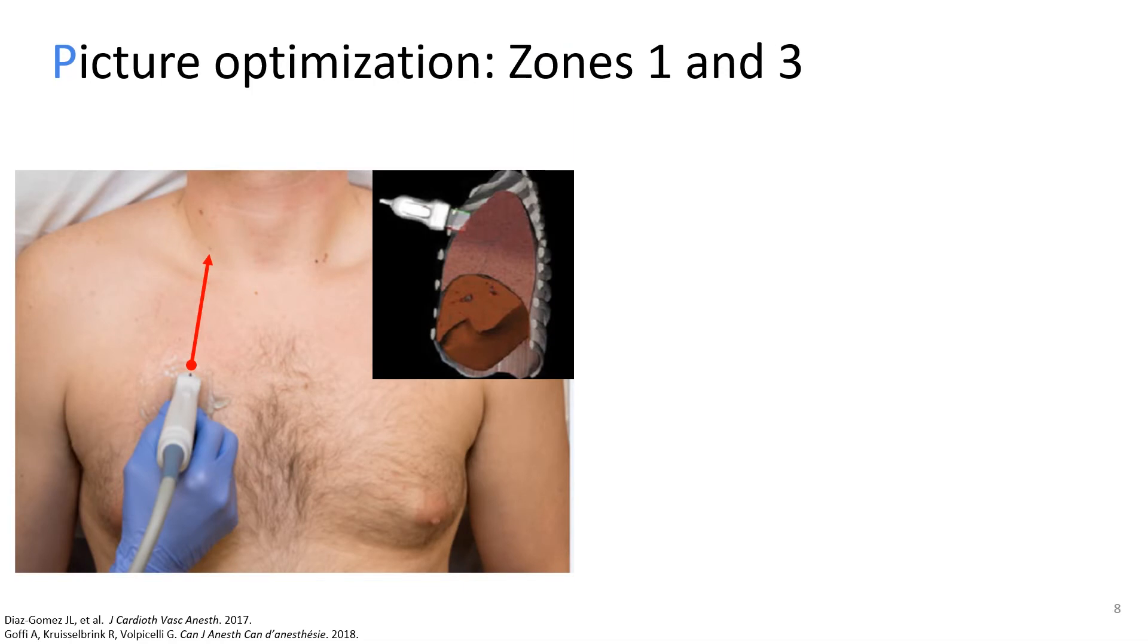Now that you know according to the pulmonary pathologies you want to evaluate how the patient must be positioned, what probe is the most appropriate, and what anatomic zones you should scan, you're pretty much ready to grab the probe, put some gel on it, and start scanning. For picture optimization, I will go over tips for probe manipulation and visuospatial orientation such that you get the best image quality possible.